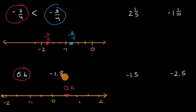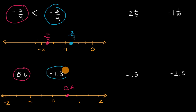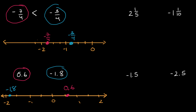And where is negative 1.8? Well, it's negative, so it's going to be to the left of zero, and we're going to go 1.8 to the left. So this is negative one, this is negative two — that's too far. This is negative 1.5. Negative 1.8 is going to be roughly right over there. And so you can see that it is to the left of 0.6 on our number line, so negative 1.8 is less than 0.6, or 0.6 is greater than negative 1.8.